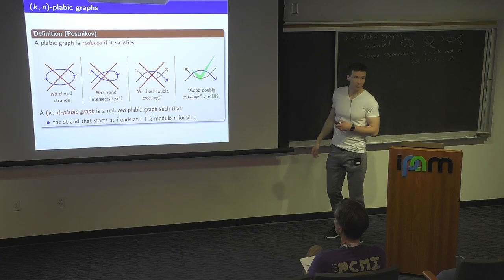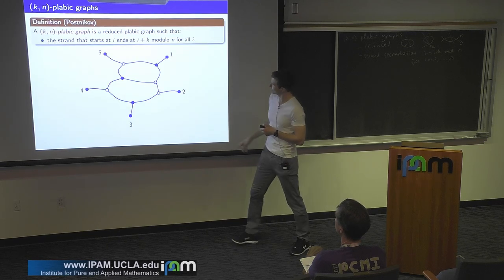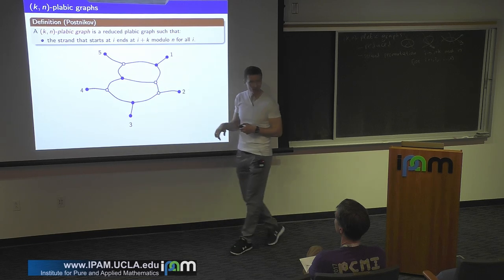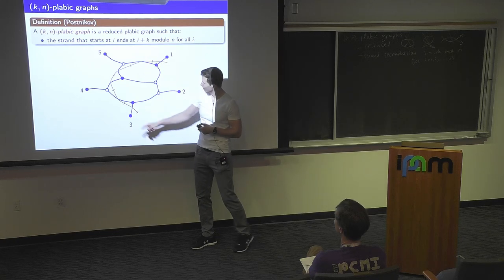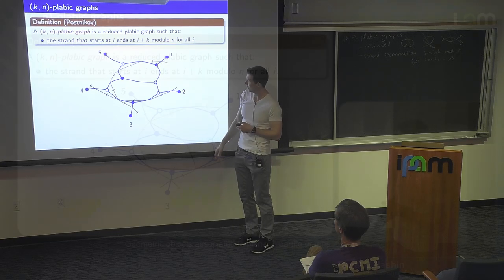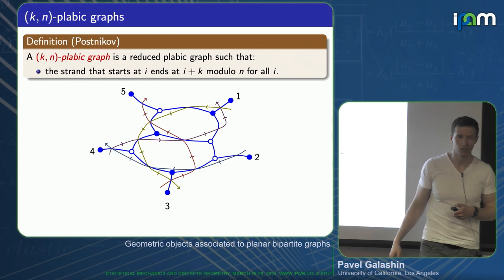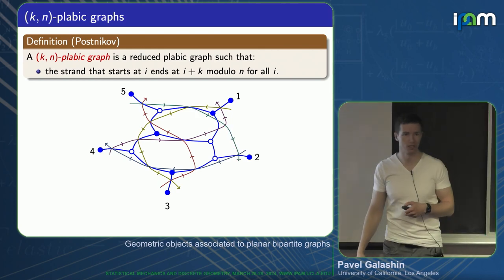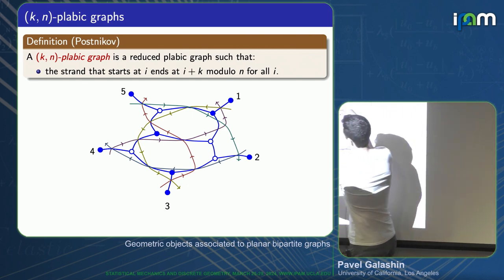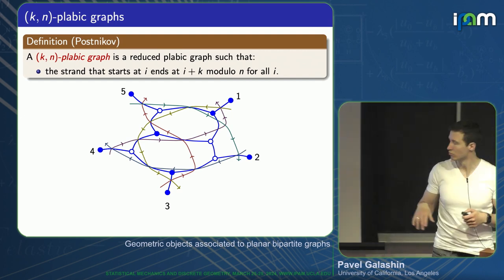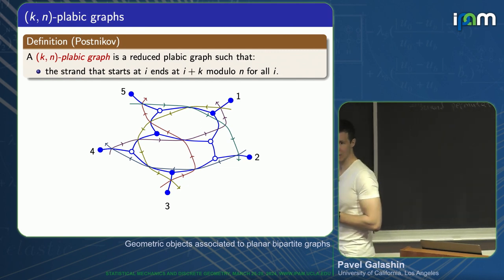Let me illustrate this by an example — it's unclear if these objects even exist. If you label the boundary vertices one through N clockwise and look at the strands: one goes to three, two goes to four, three goes to five, four goes to six (which is one modulo N), and five goes to seven (which is two modulo N). You can check that any two strands intersect in the opposite direction. So this is a K-N plebik graph for K equals two and N equals five.